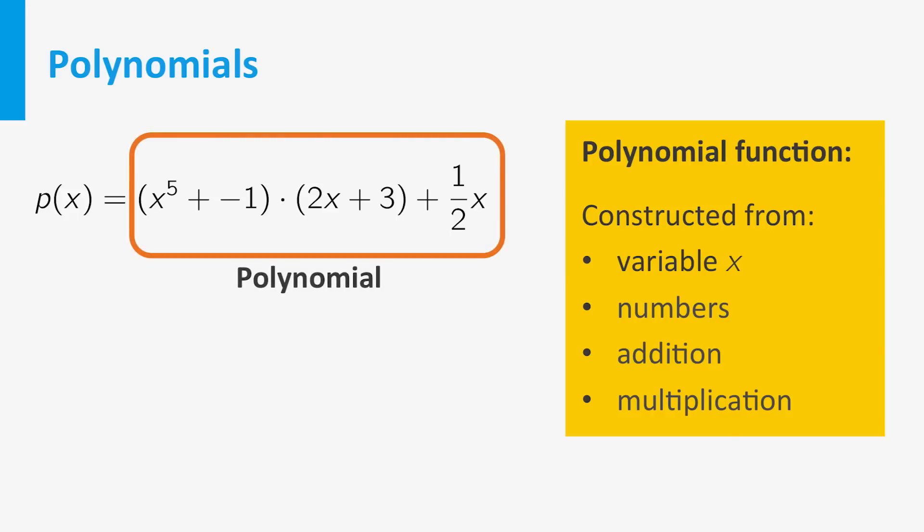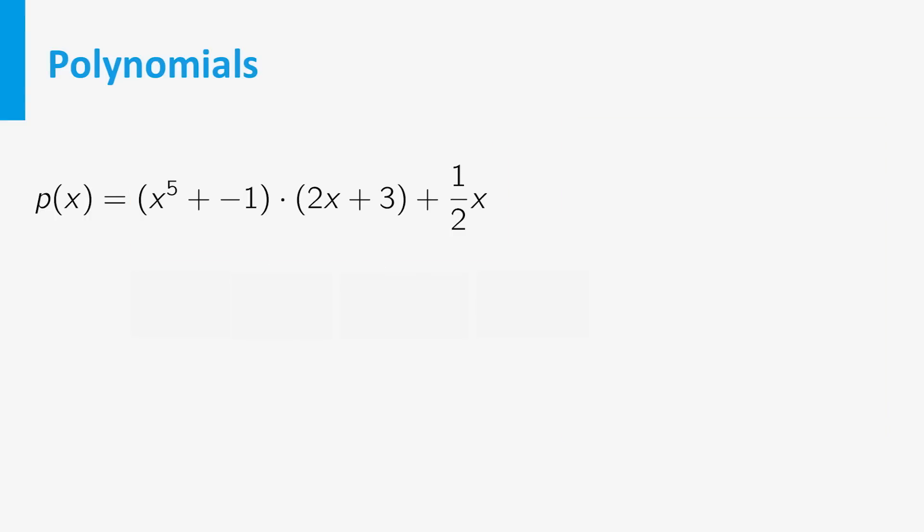The expression that defines the function is called a polynomial. The expression looks a bit messy. There is a standard way to simplify polynomials. How does this work?